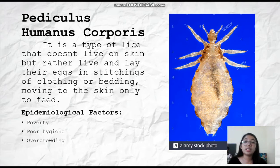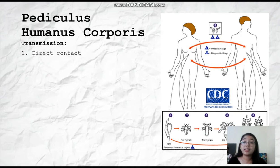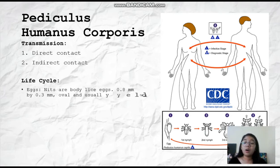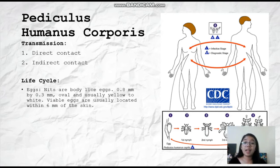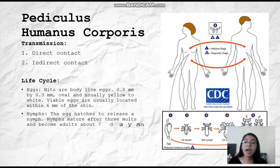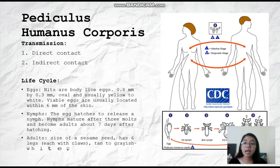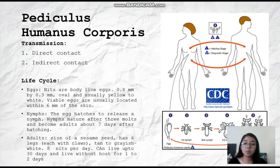The mode of transmission is the same as for head lice: direct contact and indirect contact. The life cycle: body lice eggs measure 0.8 mm by 0.3 mm, are oval, and usually yellow to white. Viable eggs are usually located within 6 mm of the skin. The egg hatches to release a nymph, which matures after three molts and becomes an adult about 7 days after hatching. The adult is the size of a sesame seed, has 6 legs, and is tan to grayish white. It can produce 8 nymphs per day, can live up to 30 days, and can live without a host for 1 to 2 days.